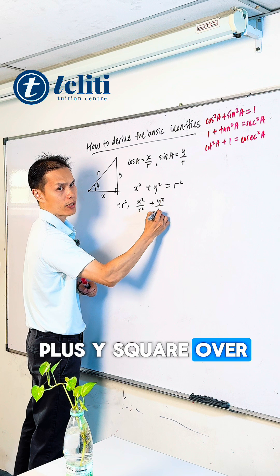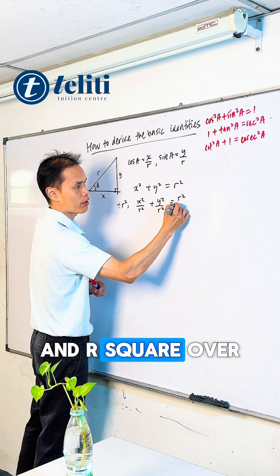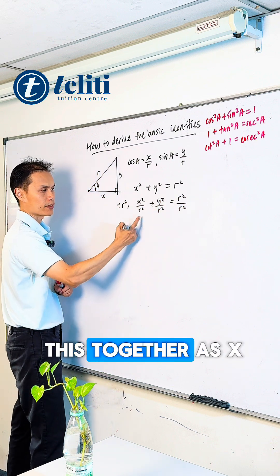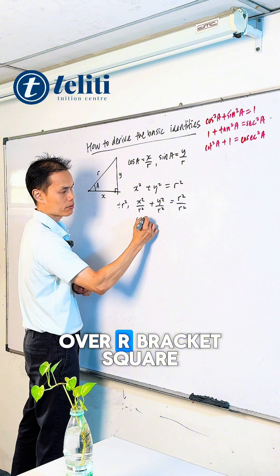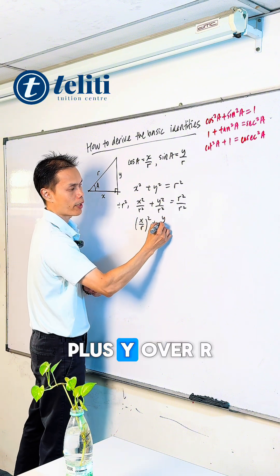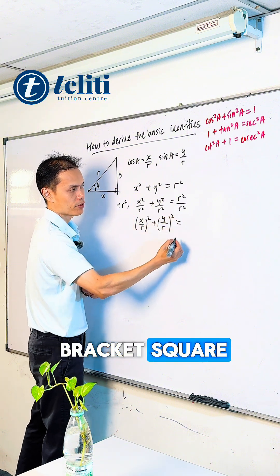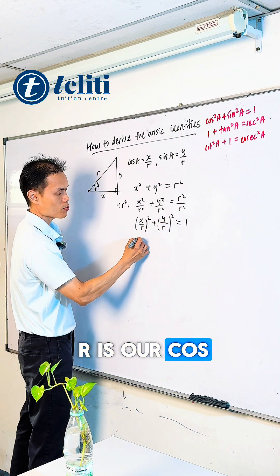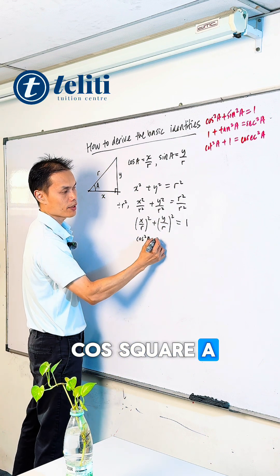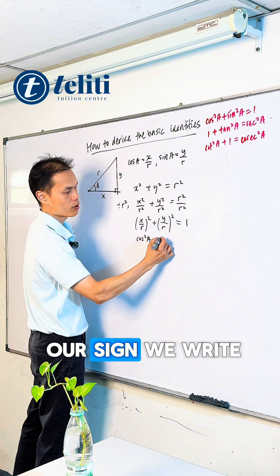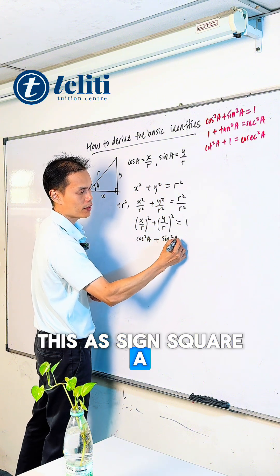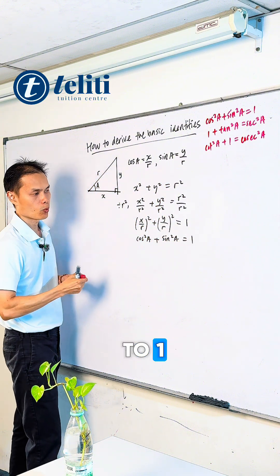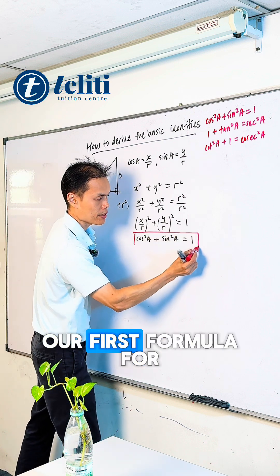We can write this as (X/R)² + (Y/R)² = 1. From here, X/R is our cos, so we write this as cos²A. Y/R is our sin, so we write this as sin²A. The result equals 1. That's how we got our first formula for the basic identity.